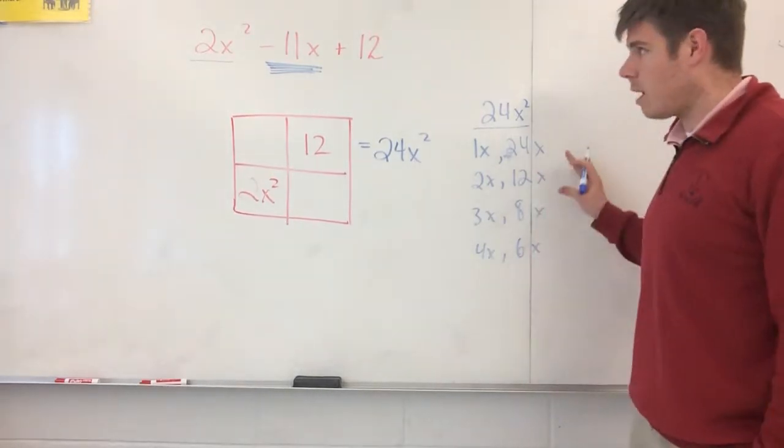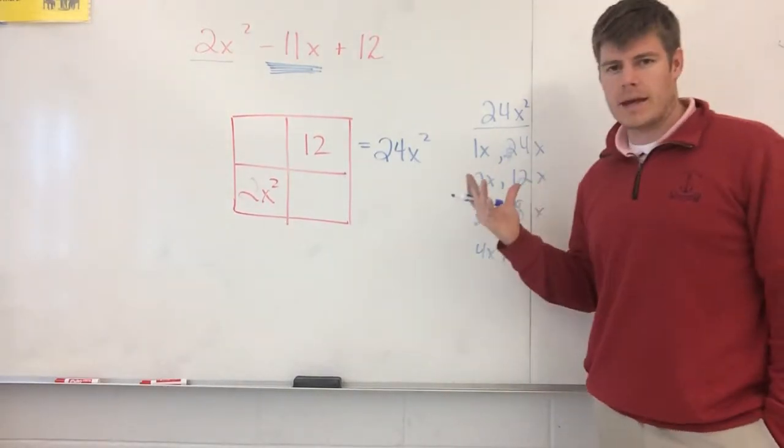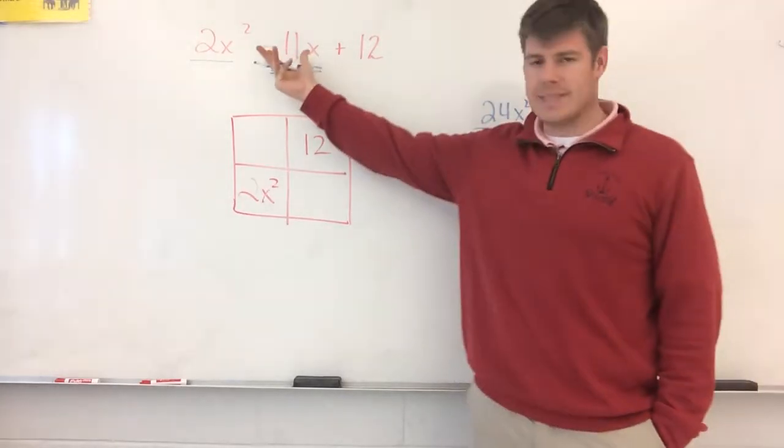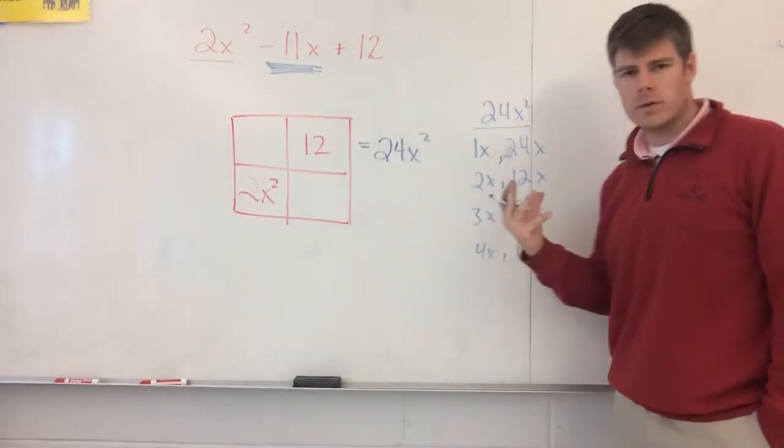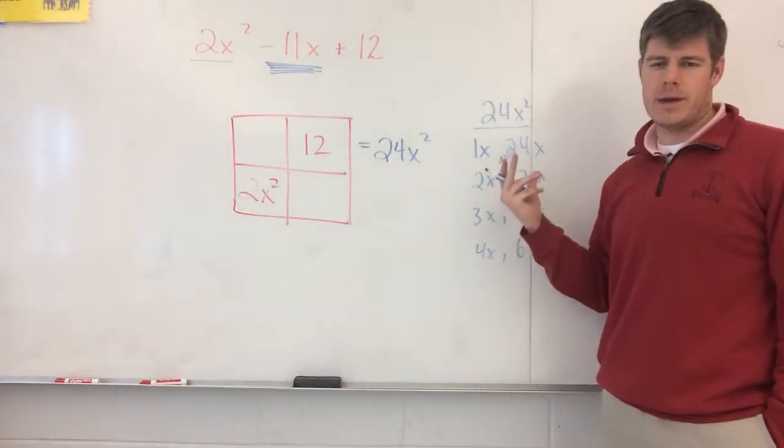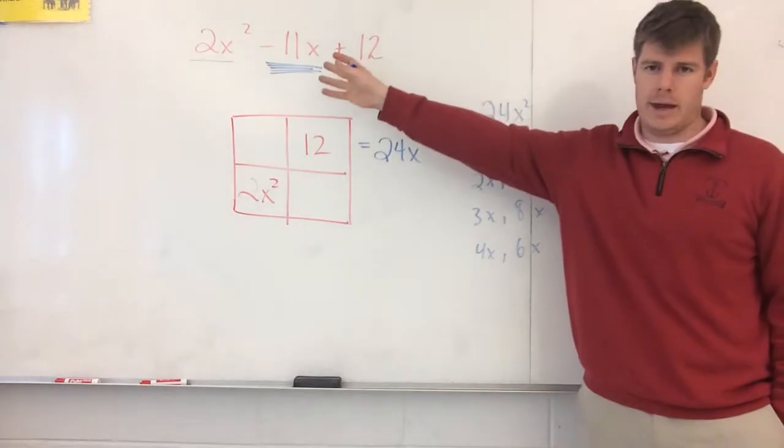And essentially out of this list, what I'm looking for is there's something that I can multiply together and makes positive 24, but one summed together makes negative 11. So generally what most kids can do, you can go through this relatively quickly. So 1 and 24, it doesn't matter if I make them both positive or negative, there's no way I'm getting negative 11.